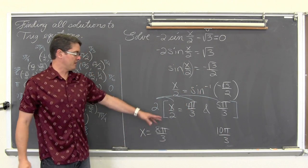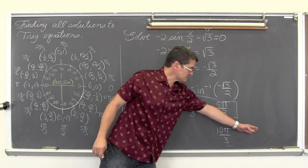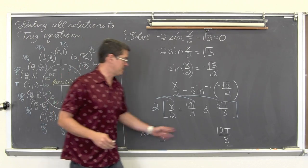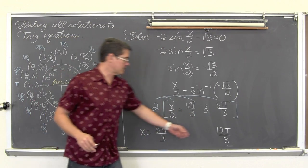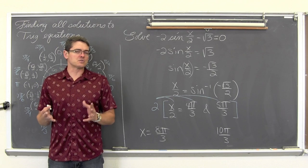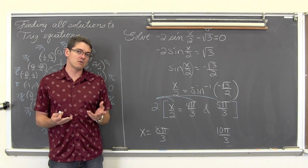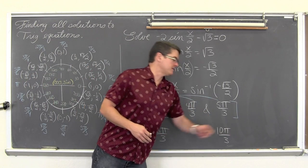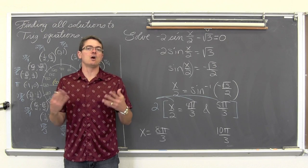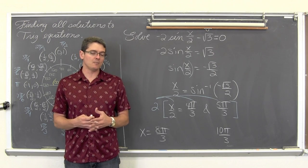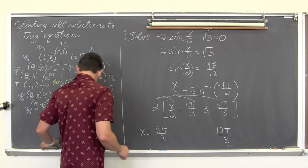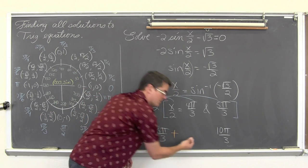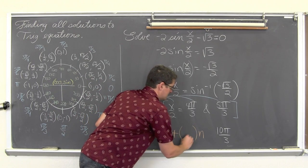I need to leave some space because I am going to have to add something to these answers to express that I am looking for all possible answers, not just these two specific angle measures. Note again that these are outside the standard restricted values of 0 to 2pi. I need to add in the period of the function times n.